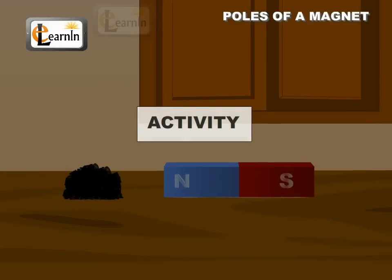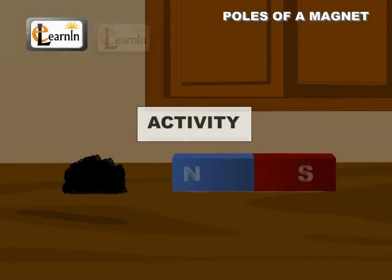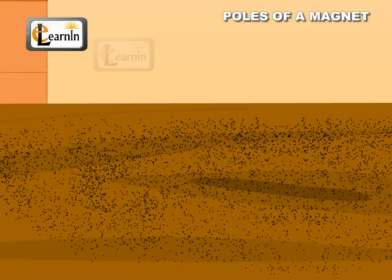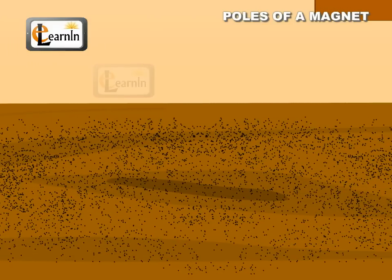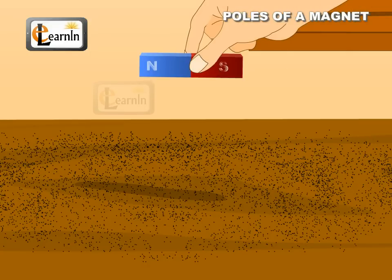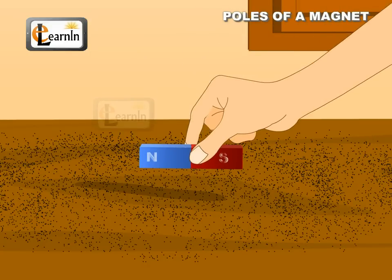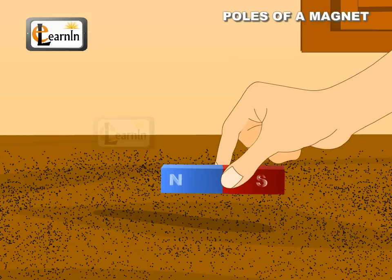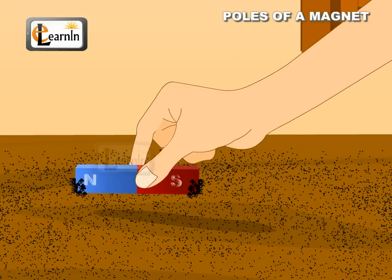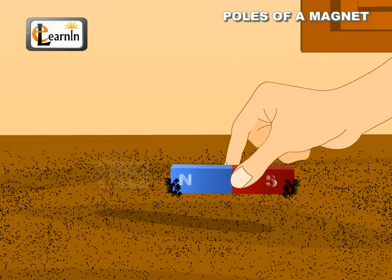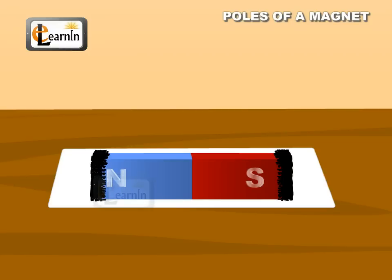Poles of a Magnet. The following activity shows how magnets get attracted. Randomly place some iron filings on a table. Now take a magnet and place it on the table for some time. Then remove the magnet and observe where the filings are attached. You can see that all the filings are attached at the two ends of the bar magnet.